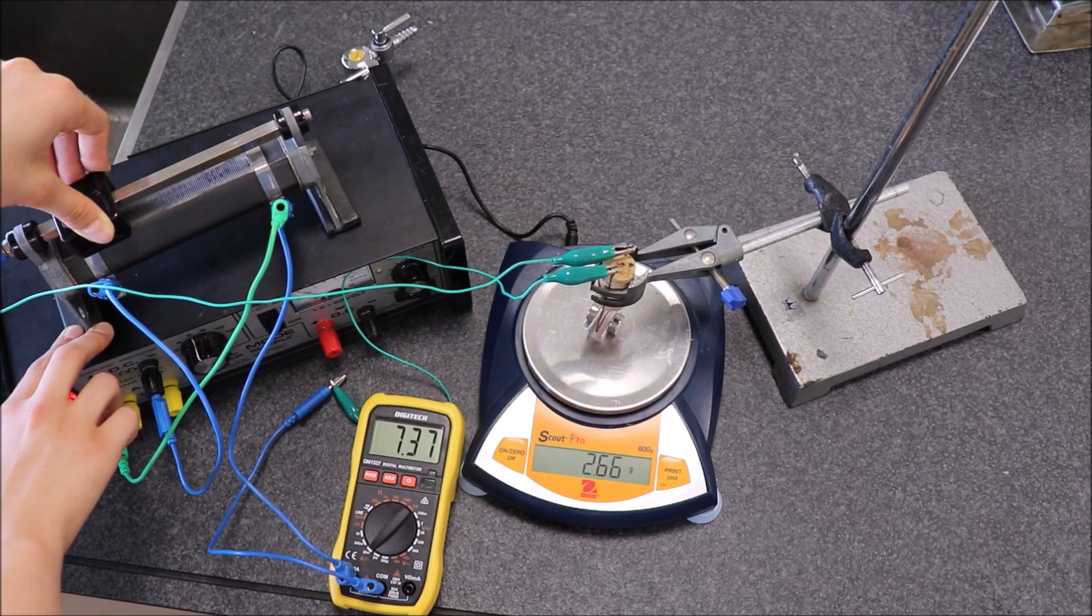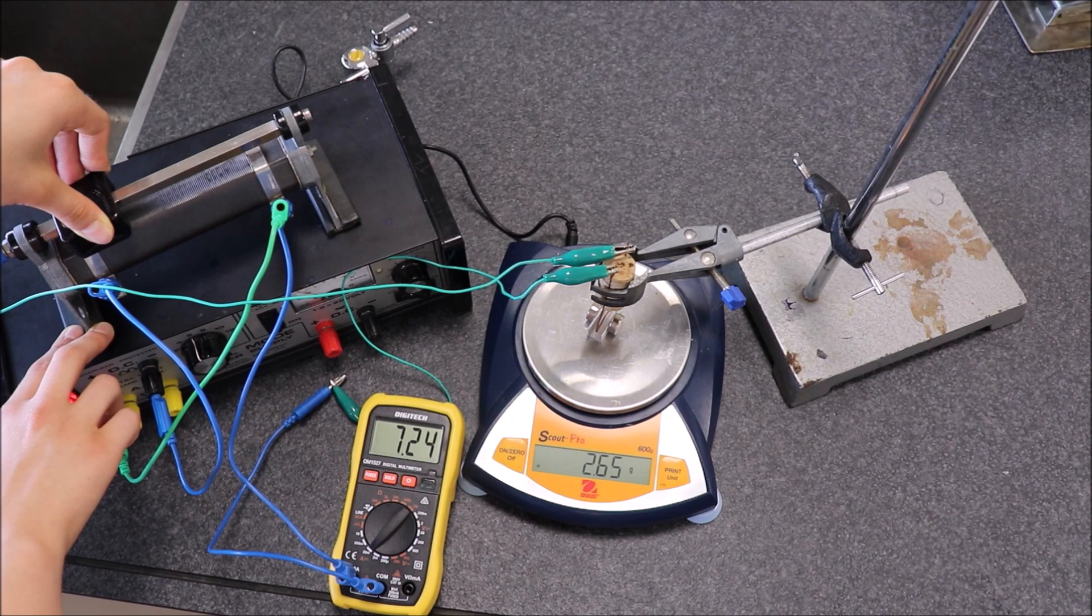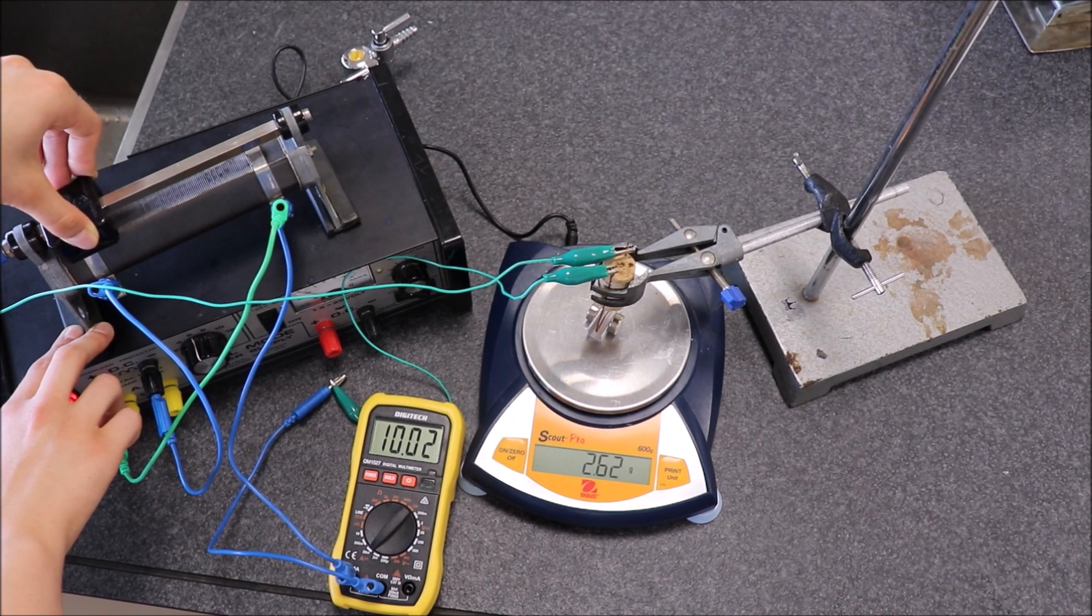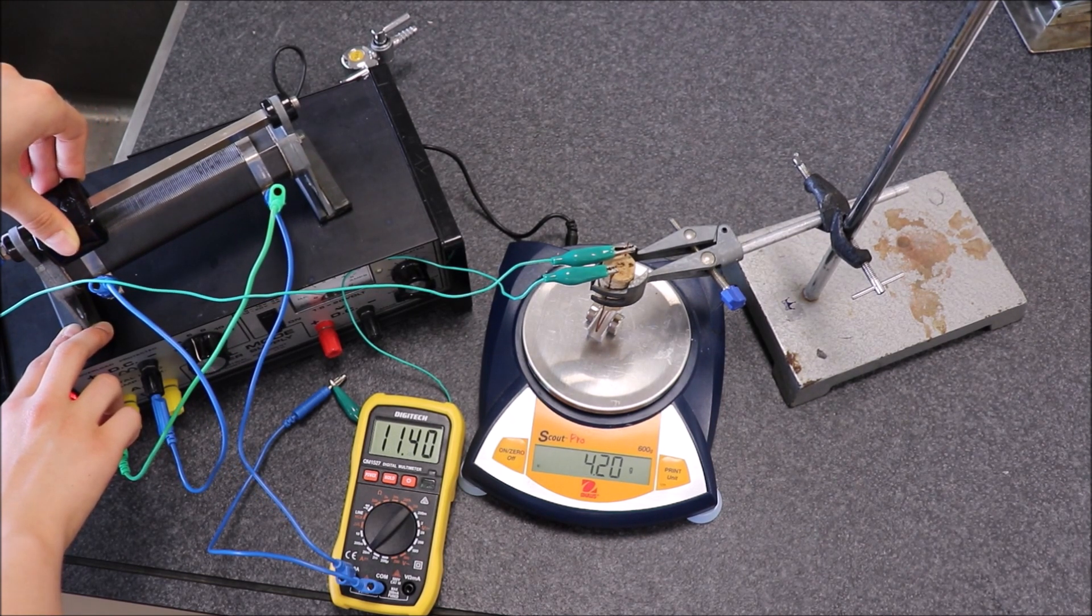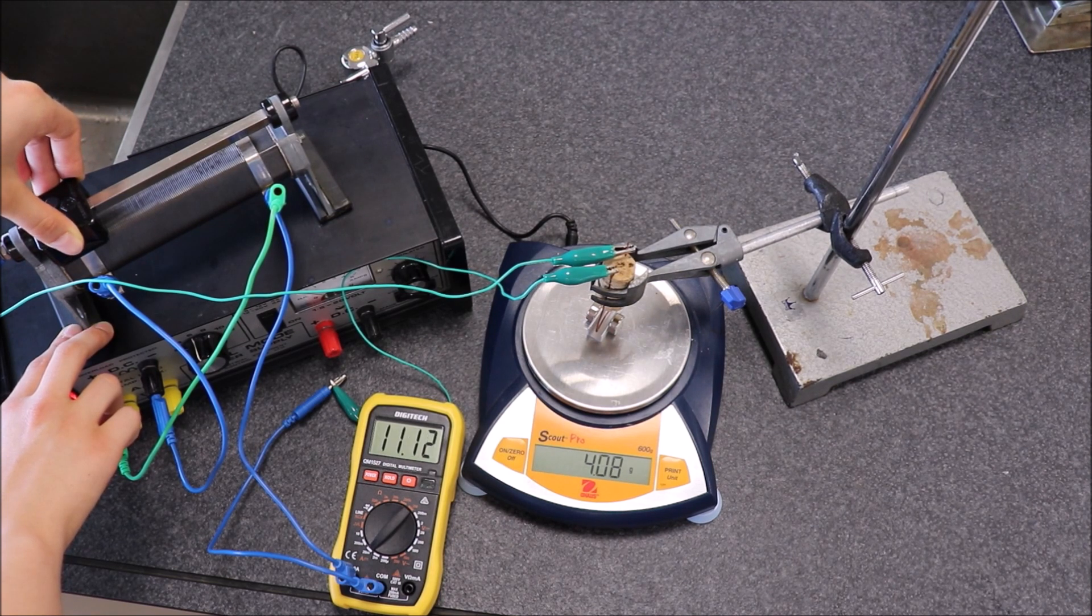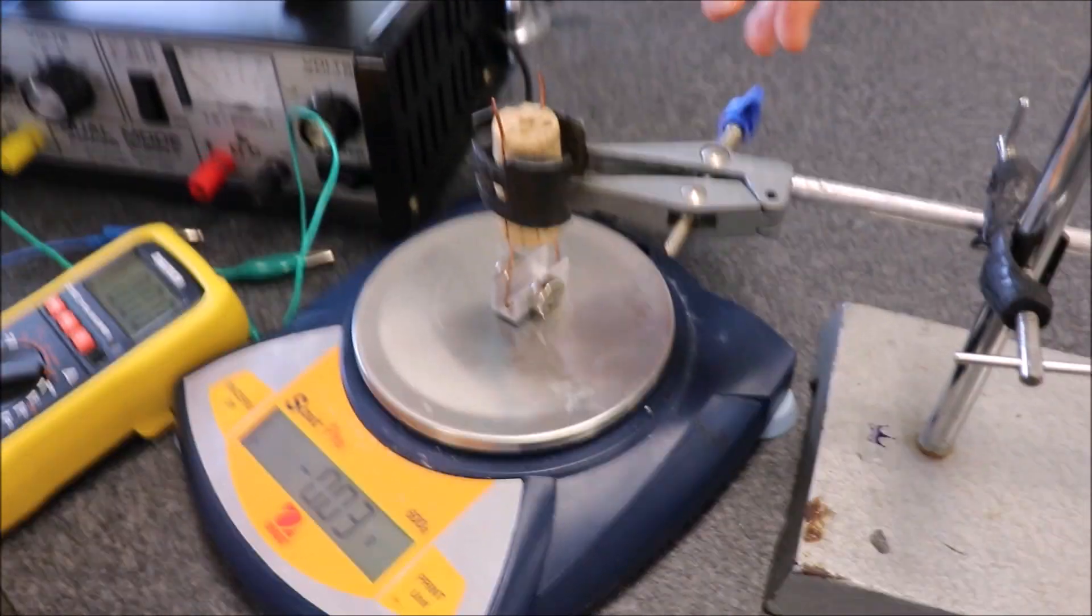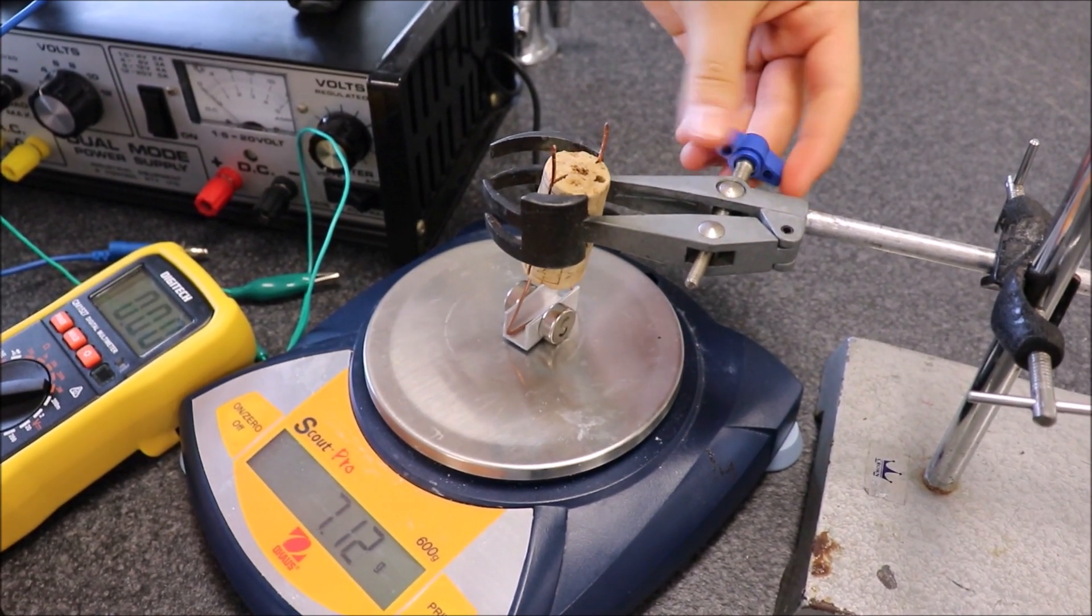So you take pairs of readings and you should get a nice linear graph for that. The gradient of the graph, F over I, is strongly related to the magnetic field strength. The formula is F equals BIL sin theta.